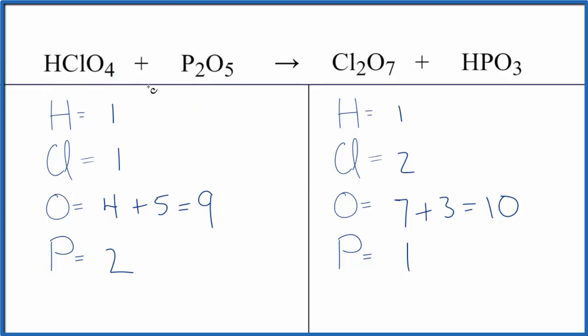I've counted the atoms up. The really big thing to be careful about is you have four oxygens here and five here. That gives you nine. Over here you have seven oxygens and three here. That gives you ten. Make sure you count those up correctly before you try to balance this equation.